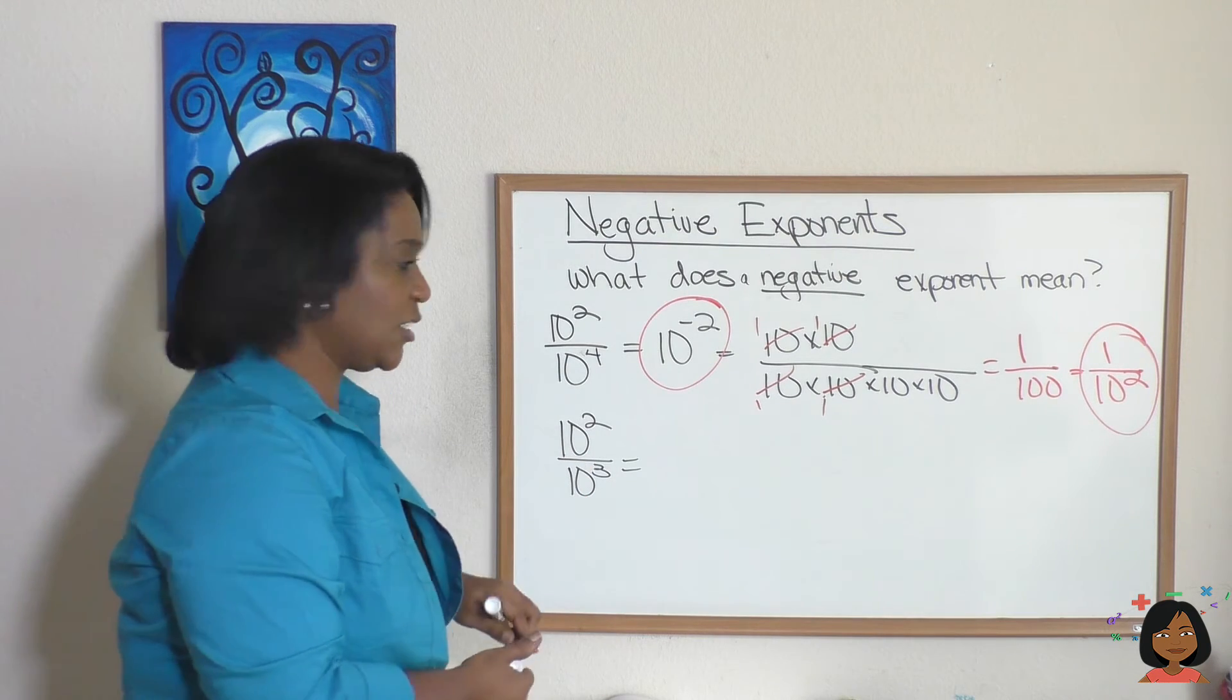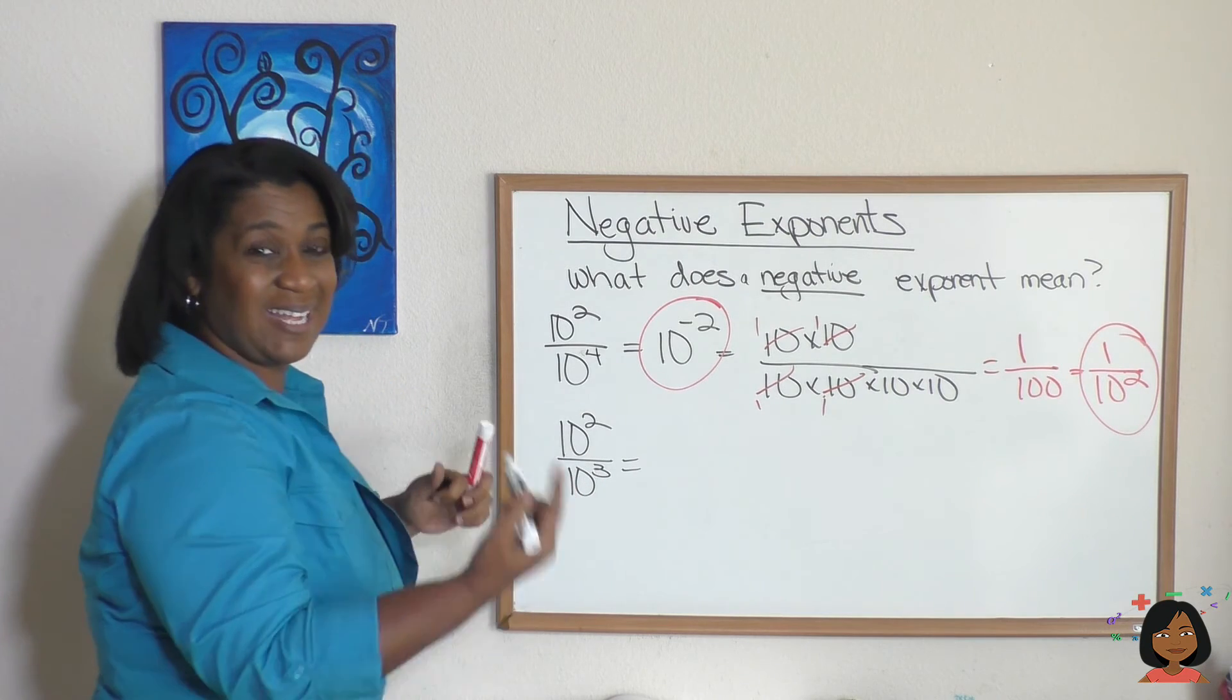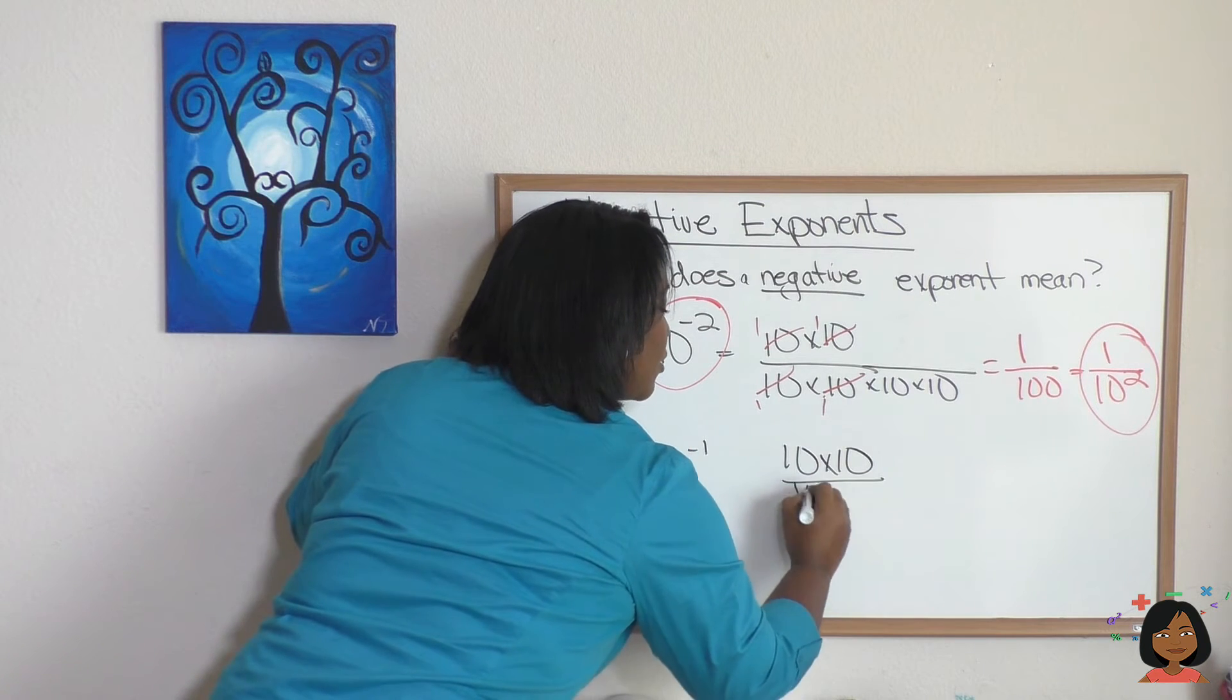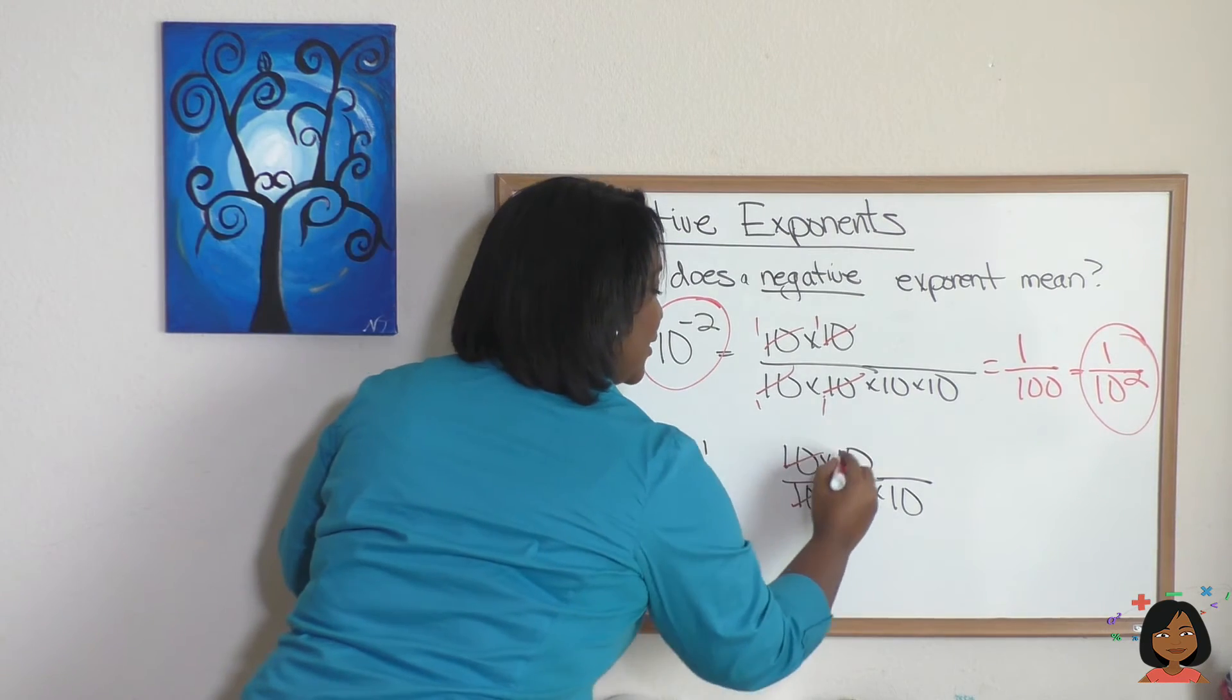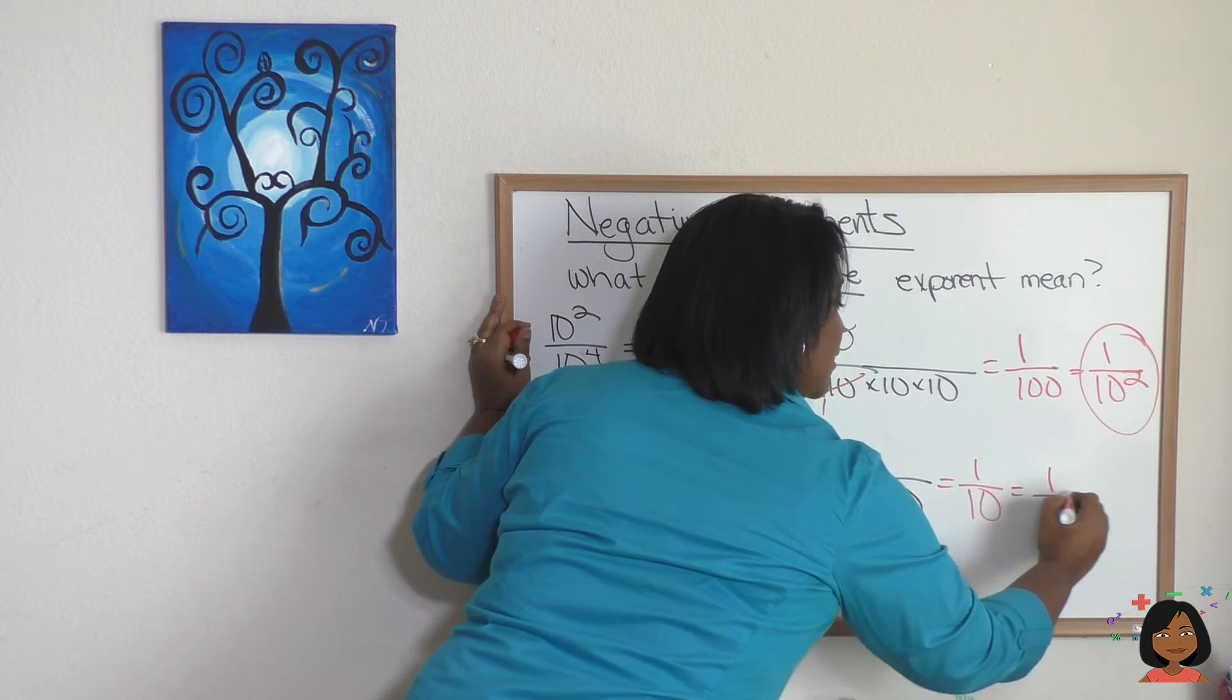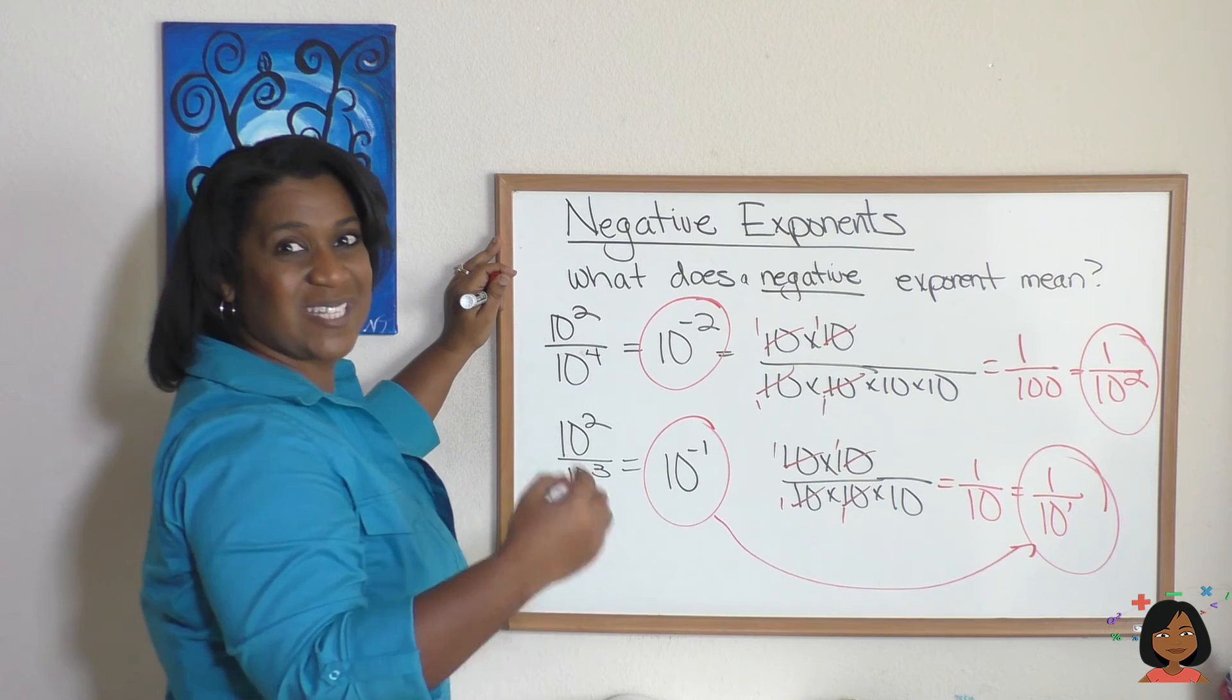Let's try it with this example. 10 squared over 10 to the 3rd. Well, let's do the trick first. Subtract the exponents. 2 minus 3 is a negative 1. 10 to the negative 1. What does it actually mean? 10 squared on top, 10 to the 3rd on the bottom, and we simplify. What does that leave us with? It leaves us with 1 tenth, which is the same thing as saying 1 over 10 to the 1st.